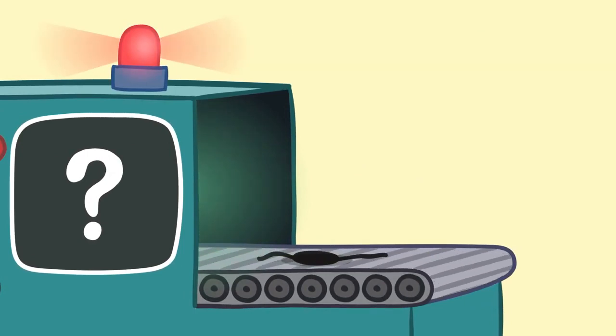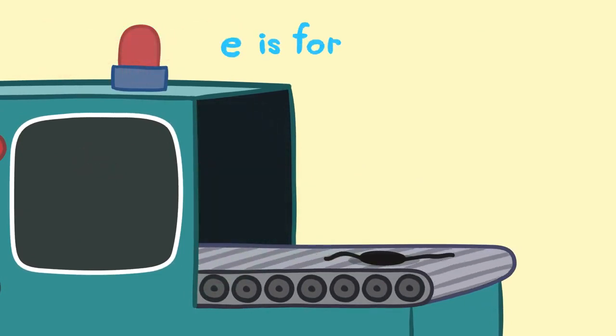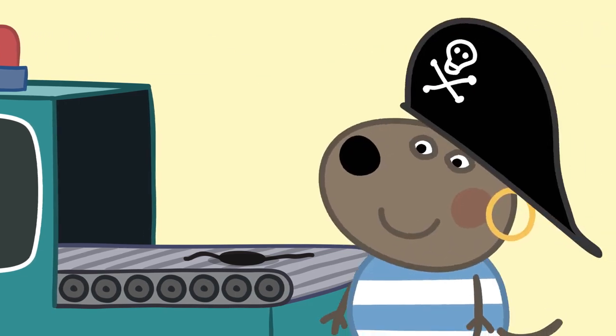Here is the last item. E is for... You are correct! E is for eye patch. This eye patch is from Danny Dog's pirate costume. A-ha!